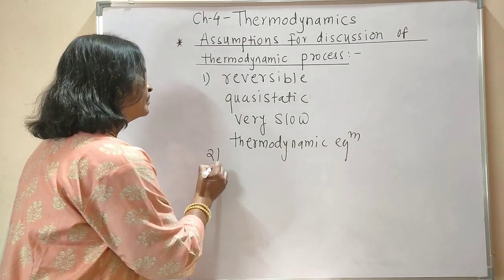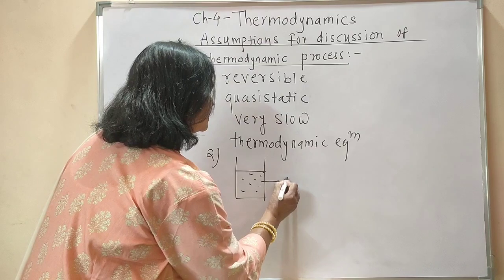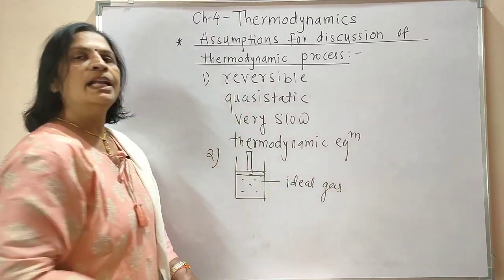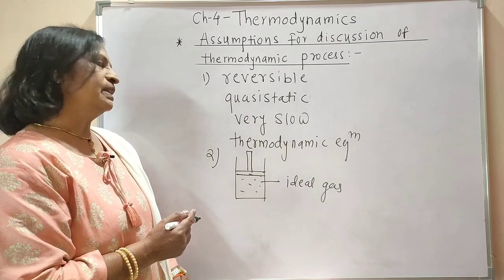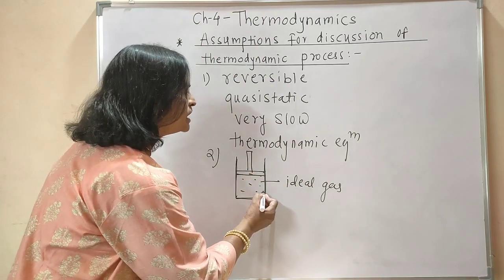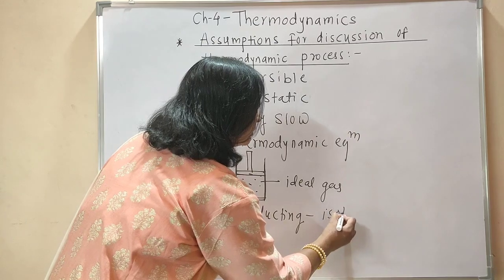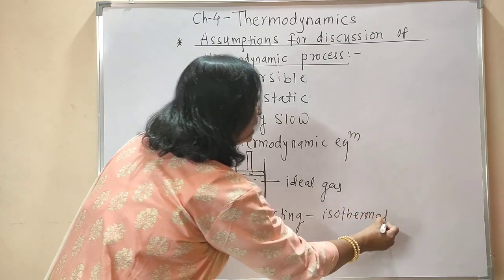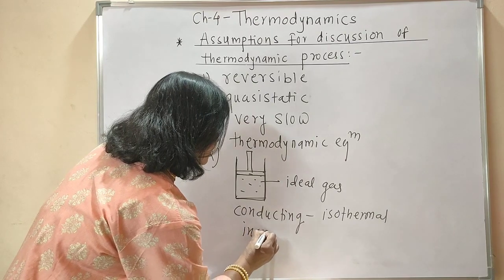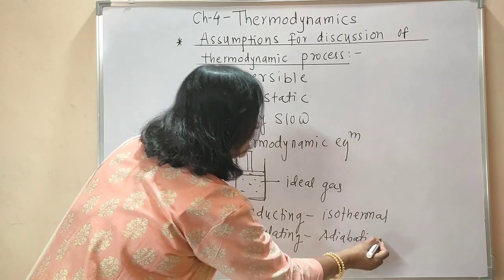The second assumption is that for every system we must consider an ideal gas, and that ideal gas is fitted with a movable, massless, and frictionless piston. For an isothermal process, the walls of the cylinder must be conducting — the boundary is conducting. For an adiabatic process, the boundary should be insulating.